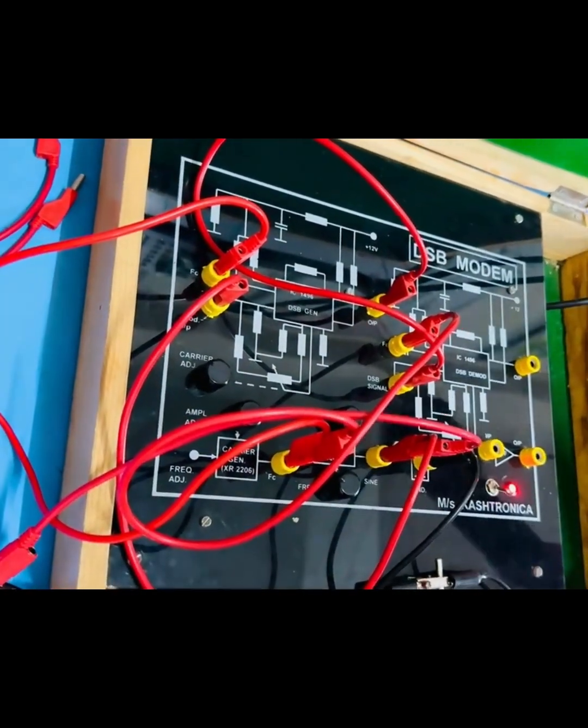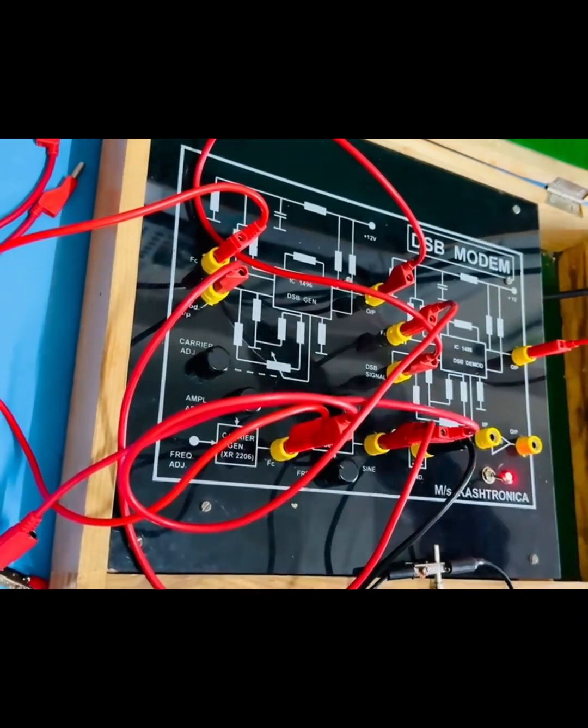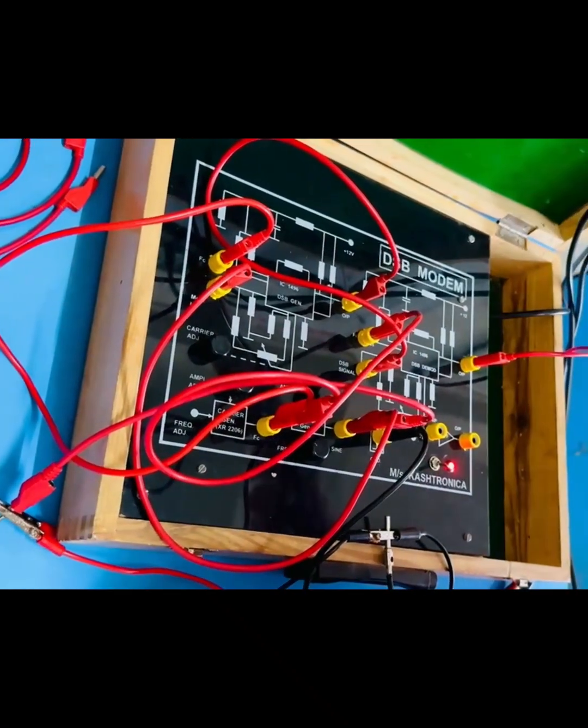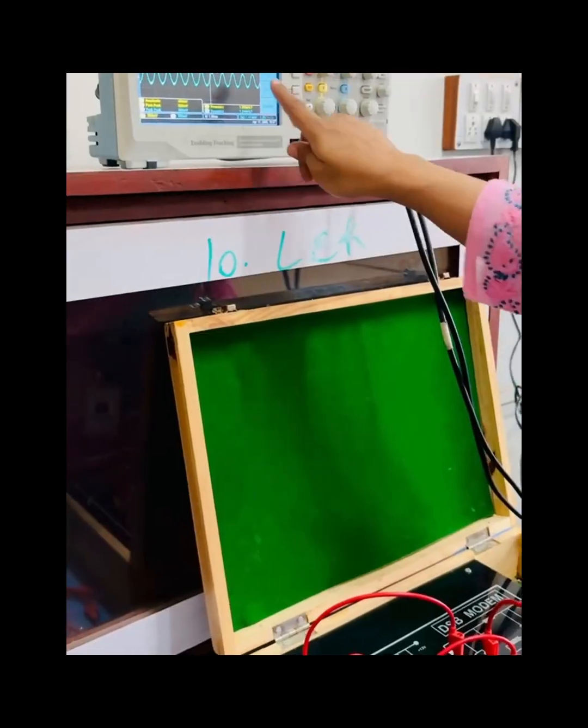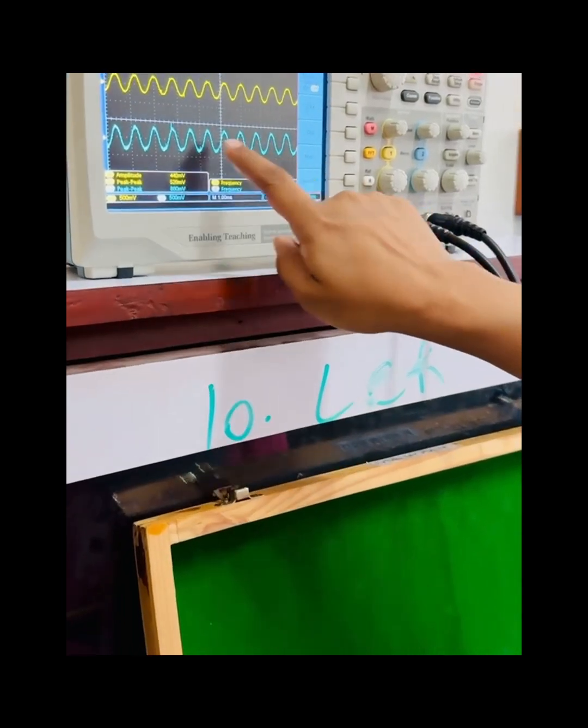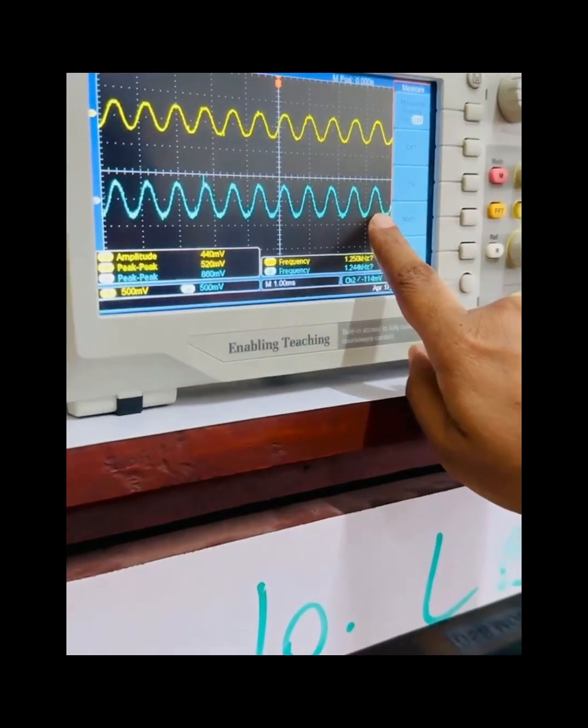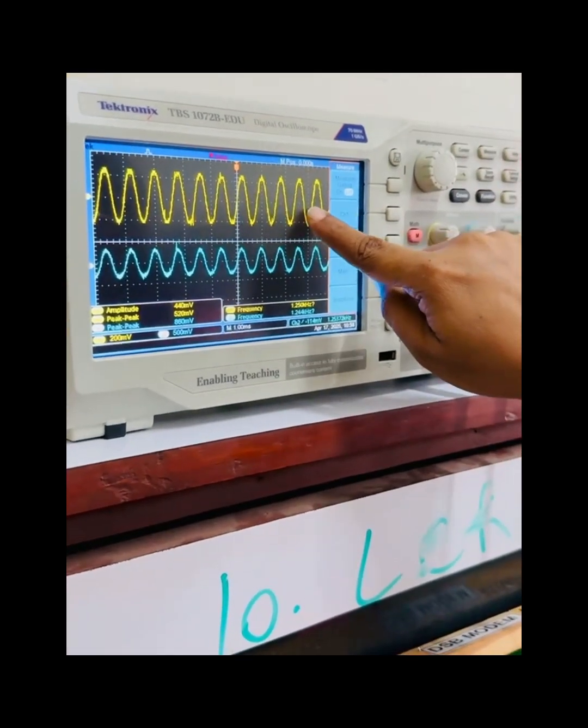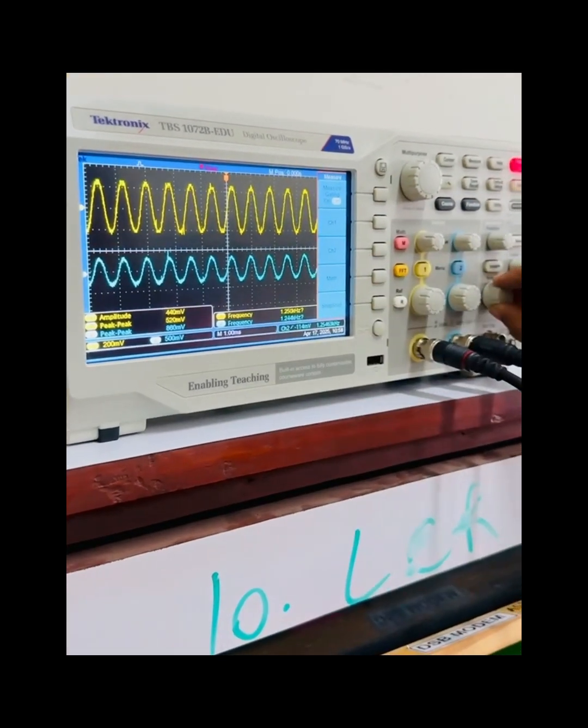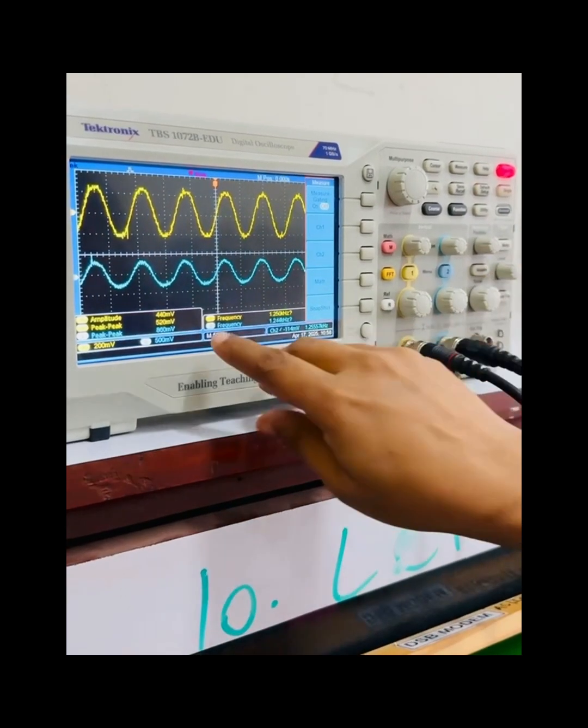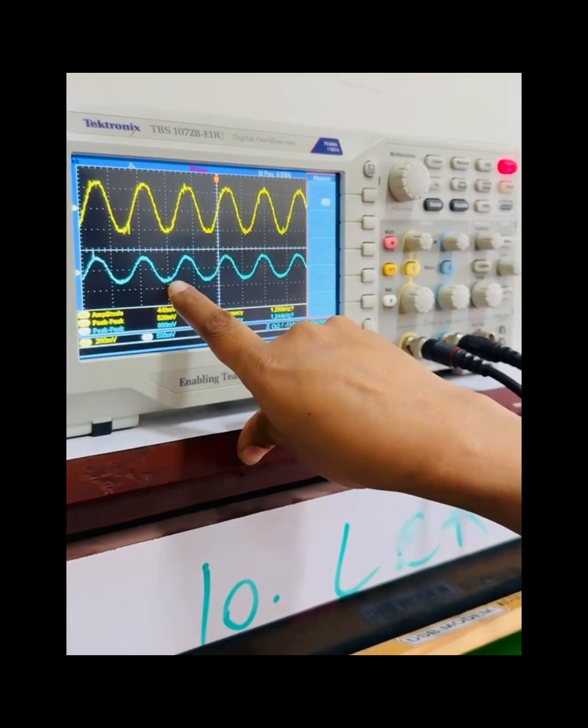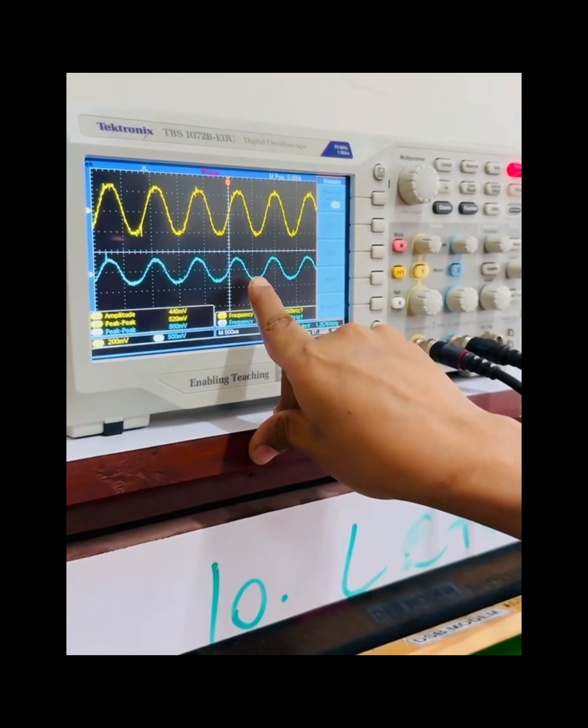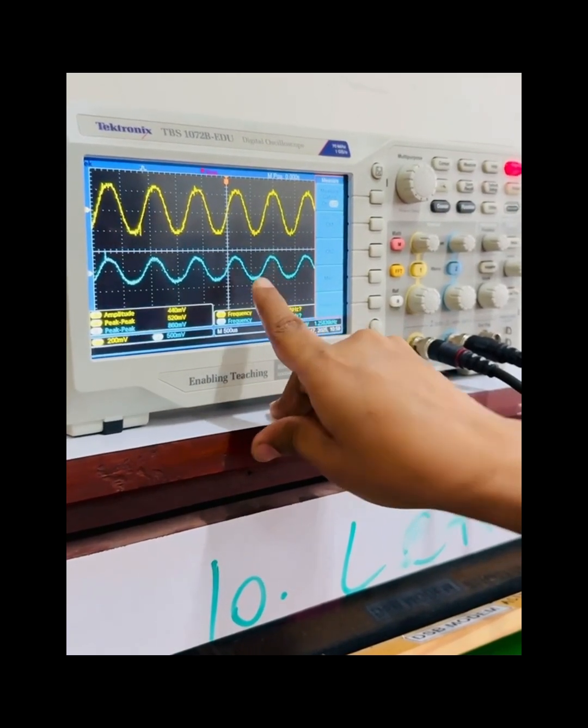Now if we observe the output of demodulated circuit, we can see the output in blue color connected to channel 2 resembles the original modulating signal. The output consists of some high frequency distortions which can be removed by passing the signal through a low pass filter.